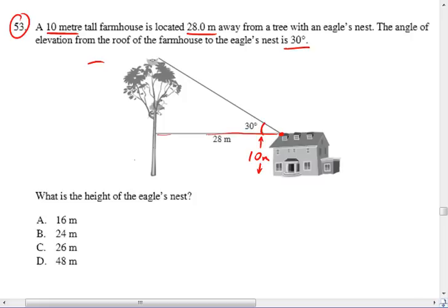We need to find the height of the eagle's nest. So the total height of this tree is what we're looking for. We've got 10 meters over there, so I'll just write that over here as well. There's 10 meters, and then I need to find this upper part of the tree, and I'm going to call that x.